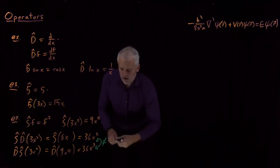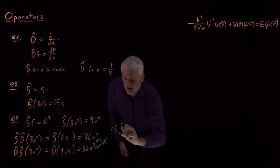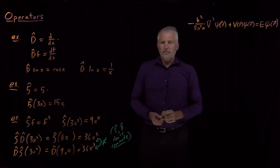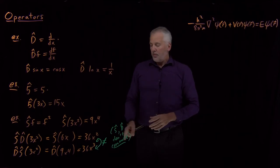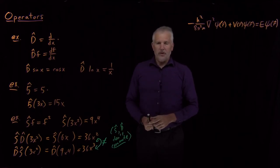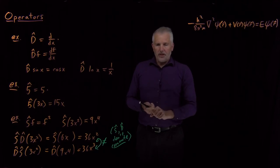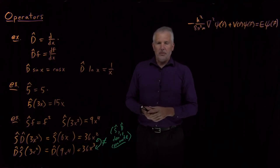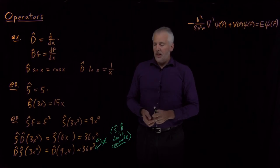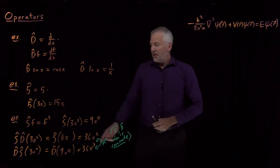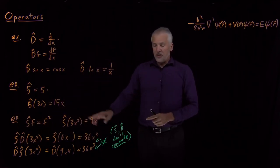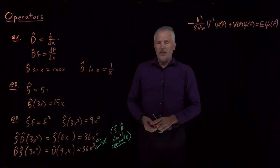In general, it will not be true that one operator followed by another is the same as the two operators in the opposite order. What we've discovered is that operators S and D don't commute. Commutativity — the commutative property — is something you learned in elementary school: multiplication is commutative, A times B equals B times A. We taught it in third grade so that one day you could do quantum mechanics, because sometimes we run across operators that don't commute with each other. Operations are not necessarily commutative — sometimes they will be, but they're not guaranteed to be.